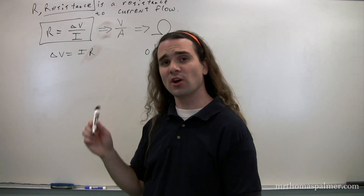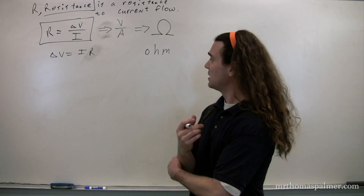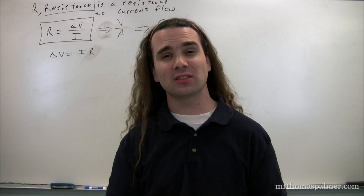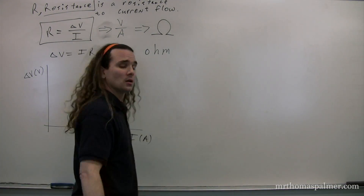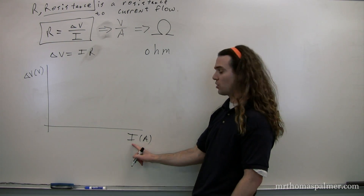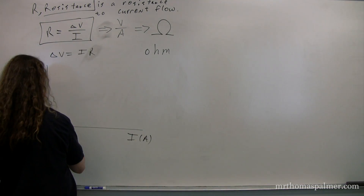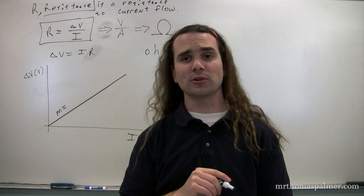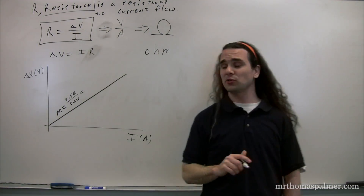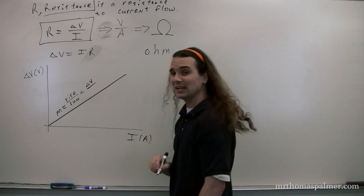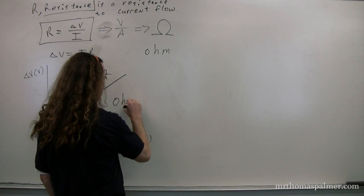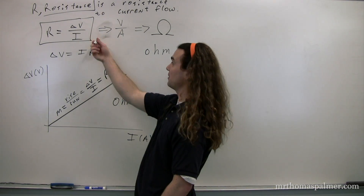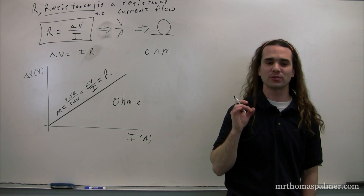The unit is called an ohm because of Georg Ohm, who was alive in the early 1800s. He did a lot of experiments with resistance and discovered there were two different types of substances. One of them we call ohmic. The graph for an ohmic substance has electric potential difference in volts on the y-axis and current in amps on the x-axis, and you get a linear relationship. The slope of that line is rise over run — the rise is the electric potential difference, the run is the current — which equals the resistance. When you graph a substance that is ohmic, you get a linear relationship. This is called Ohm's law, and the slope of the line is the resistance of the substance.